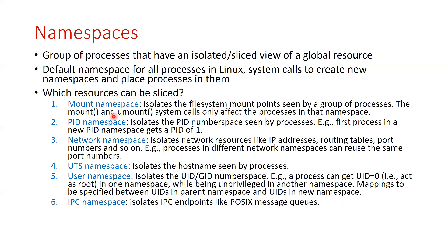Normally you mount at the root and that creates your root file system view that all processes have. These mount points can be different for different groups of processes. By default there is a root file system, but you can isolate a set of processes and say these processes will see a separate root file system — a separate set of directories starting from the root. You can isolate the root file system by placing processes in a different mount namespace.